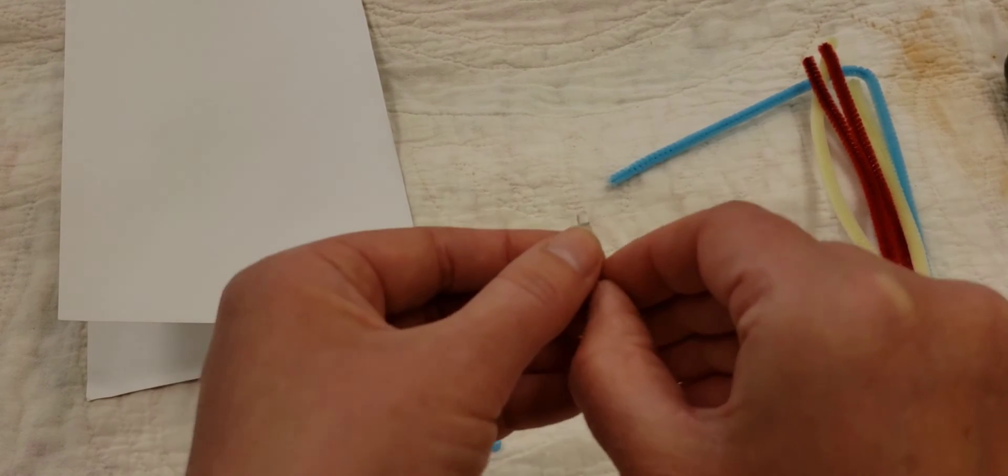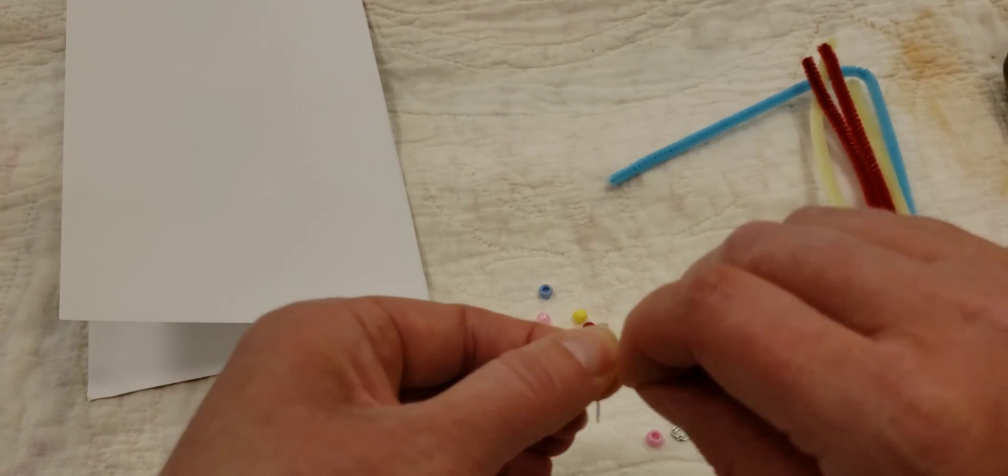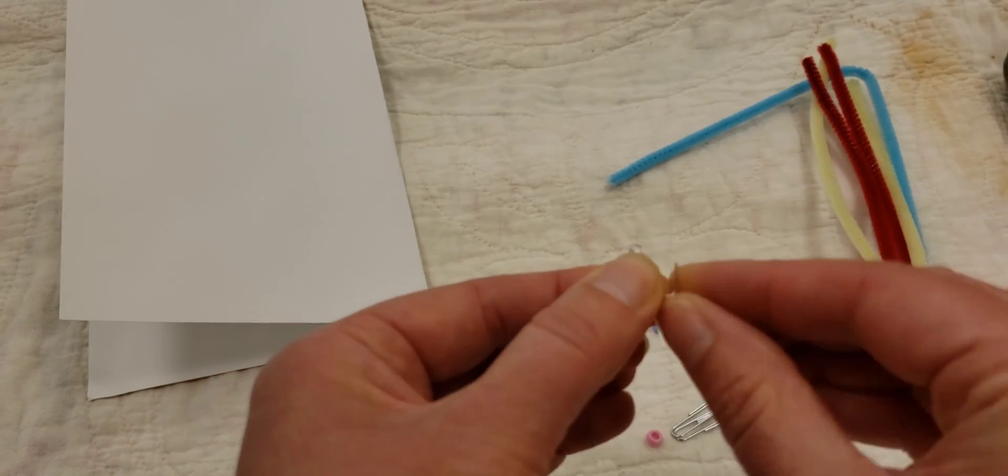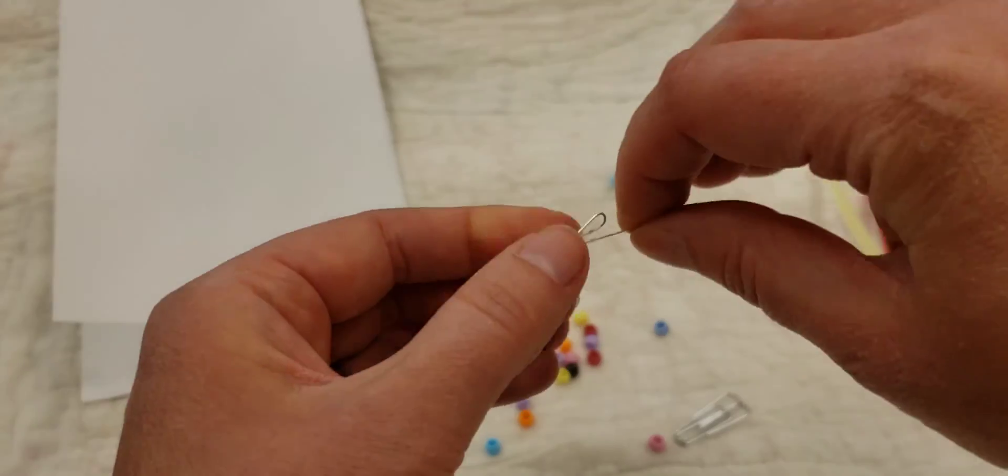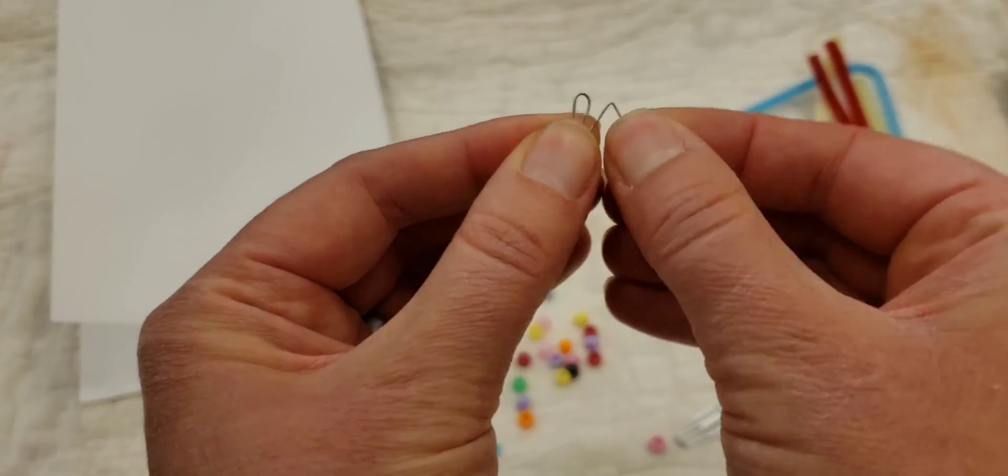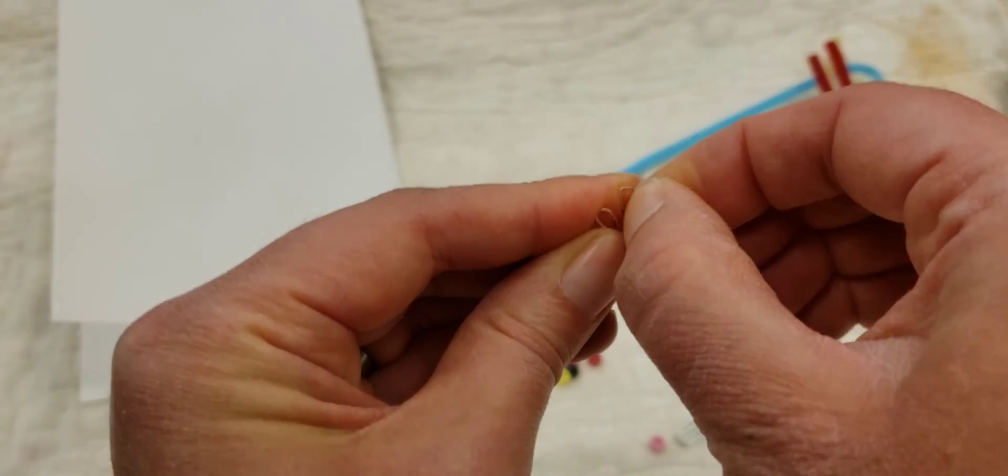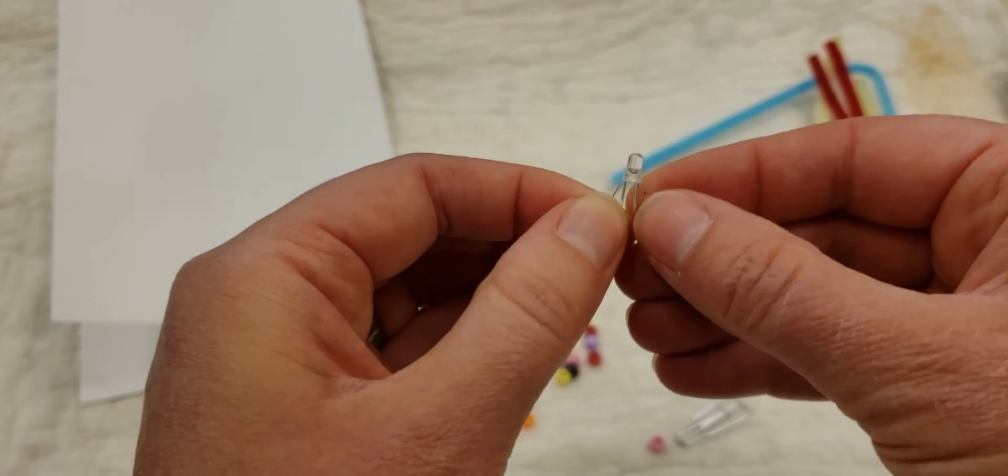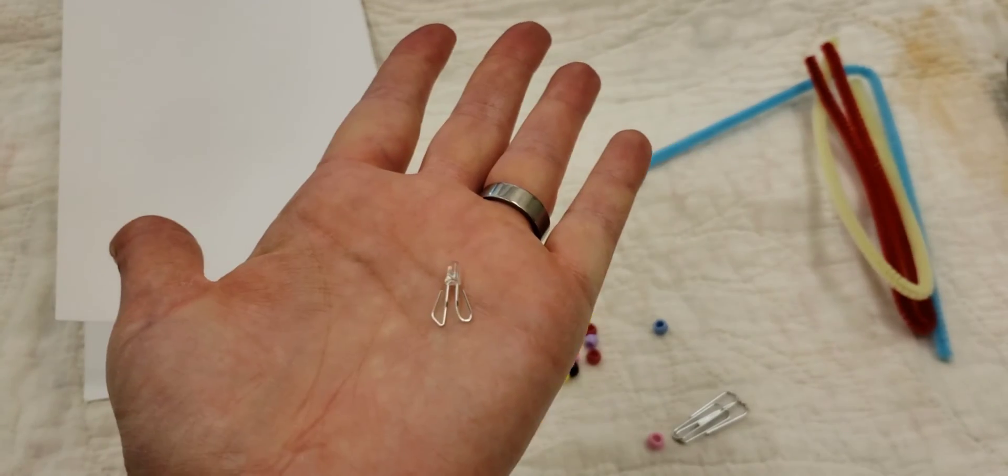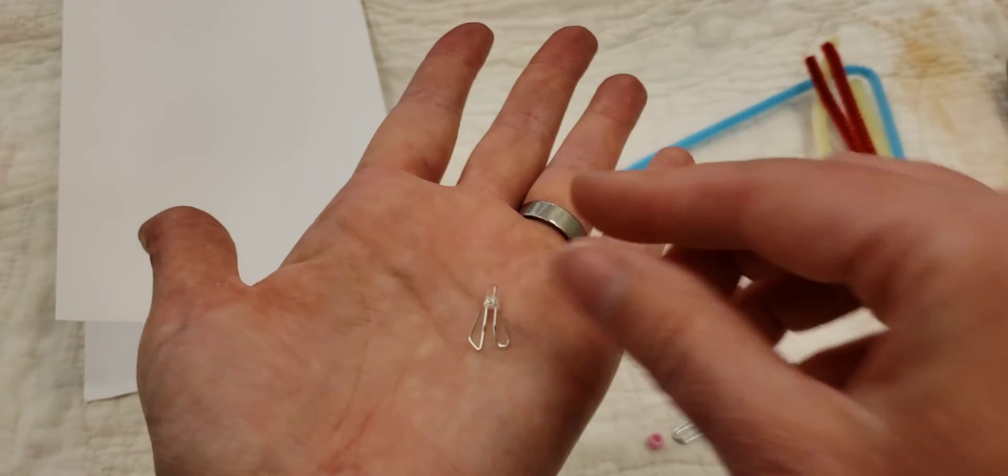The next thing we're going to want to do is we're going to take our LED light and we are going to bend some loops with the two wires. Okay now I have two loops on the wires of my LED light.